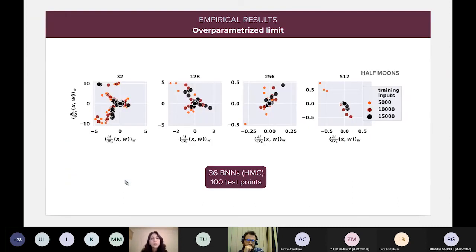Okay. Okay. In this first plot, basically, we are showing what happens towards the overparameterized limit, meaning that both the number of training inputs that are shown on the right and the number of hidden neurons, which are shown on the upper part of each subplot, are increasing. And here we are working on the half moon data set, which has only two components, so we are showing both of them. And we are using 36 BNNs trained with HMC to compute these expected gradients on 100 test points. And as you can see, as the number of hidden neurons and training inputs increase, these components tend to shrink towards zero.